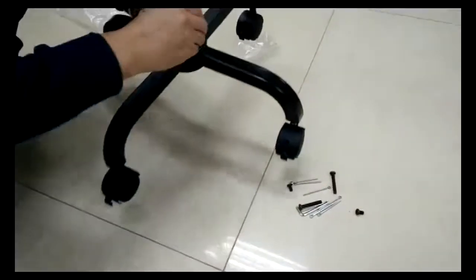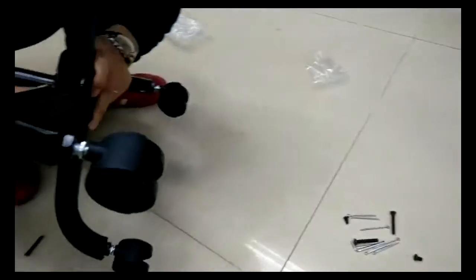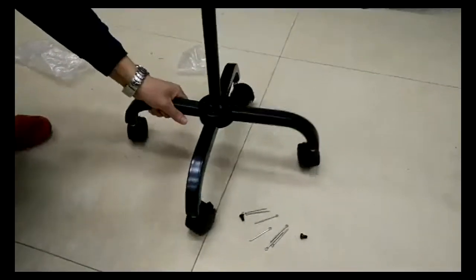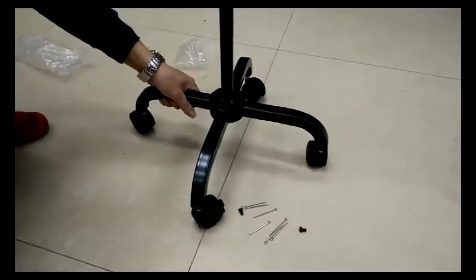Then you sit the lower tube flange over to align all the holes and then use a long screw to fasten into the welded nut at the bottom.